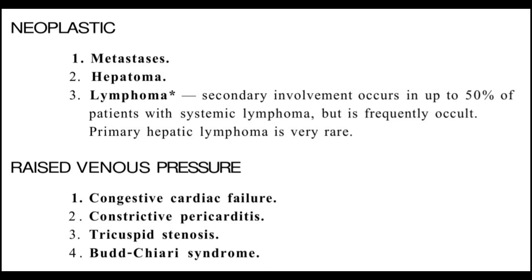Hepatomegaly may also be caused by raised venous pressure. In congestive cardiac failure, back pressure of blood towards the liver causes enlargement. In constrictive pericarditis, inflammation of the pericardium may result in liver enlargement. In tricuspid stenosis, blood reverses towards the liver, causing enlargement. In Budd-Chiari syndrome, the hepatic vein gets blocked or narrowed due to a blood clot, causing backflow and blockage of the blood channel, resulting in liver enlargement.